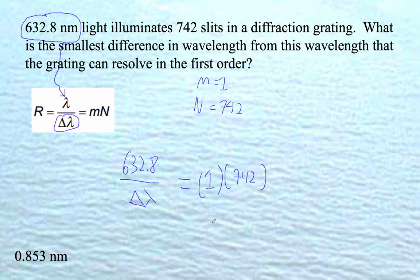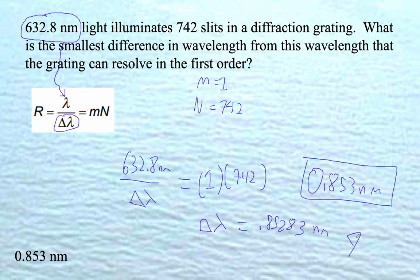And I get that the change in lambda, on my calculator says 0.85283. Now notice these are nanometers, so I'm going to end up with nanometers. So 0.853 nanometers. Ta-da!